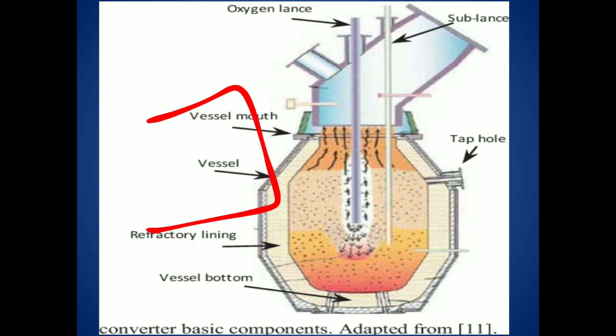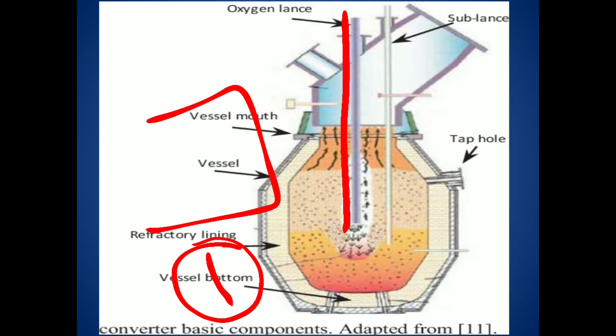In the first stage, the converter is rotated horizontally to load the steel scrap as well as molten pig iron. After that, it is tilted upright and oxygen is introduced.